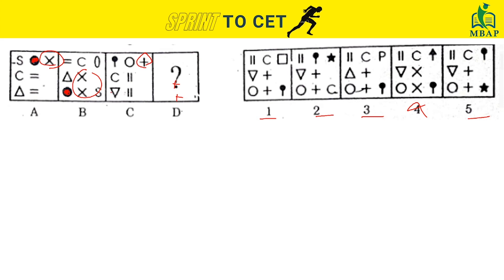That circle movement is happening in options one, two, four, and five — so we still couldn't eliminate further. Let's look at the triangle: it came from here to here, so this other triangle should come to the corresponding position. Looking at the 's' figure — it moved from here to here, which means this figure should come to this side.